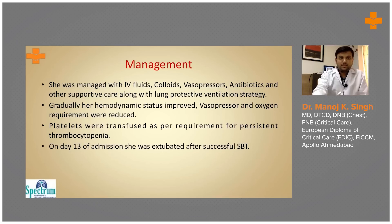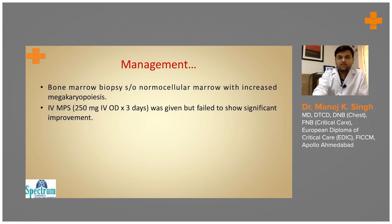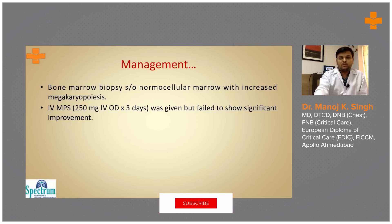We consulted the hematologist for the cause of persistent thrombocytopenia. After consulting with the hematologist, we performed a bone marrow biopsy. The bone marrow was suggestive of increased megakaryopoiesis with a normocellular marrow.